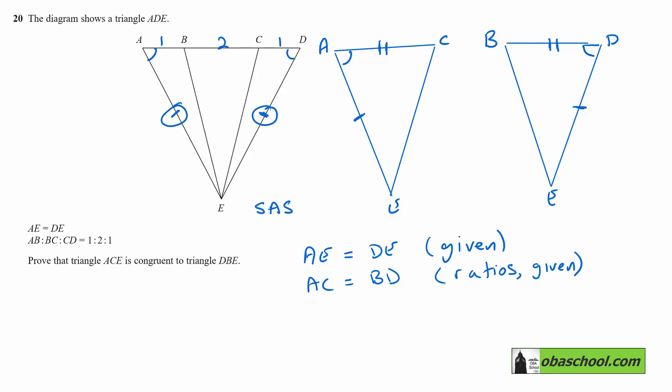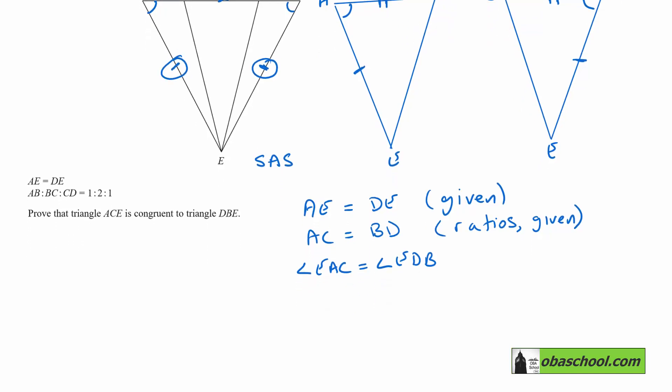And then angle EAC is equal to angle EDB. And that's because of what we just worked out. So base angles in an isosceles triangle.